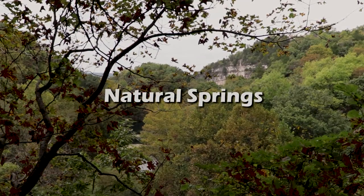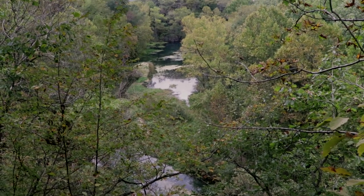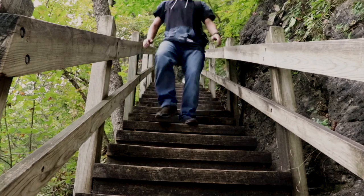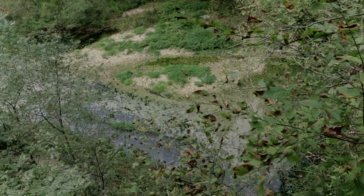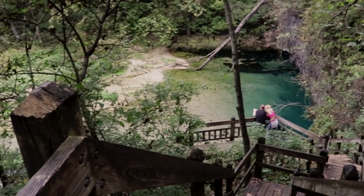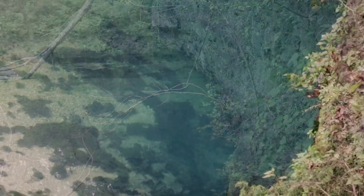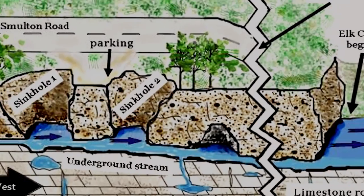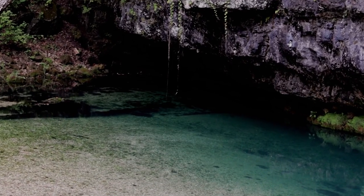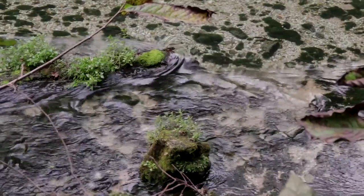The Ha Ha Tonka Spring discharges about 48 million gallons of water every single day! This spring is formed from rainwater over a large area of land that collects underground and creates underground streams deep below the earth. These underground spring streams can make caves that often take tens to hundreds of thousands of years to form.